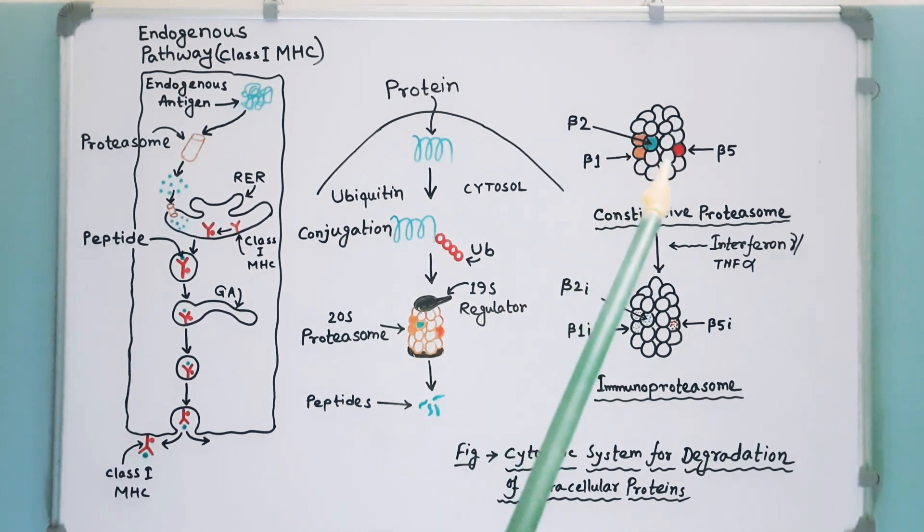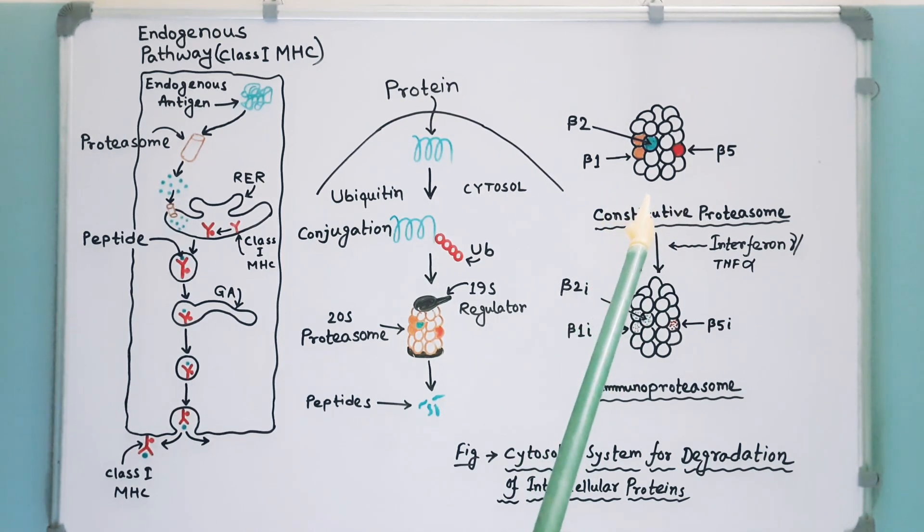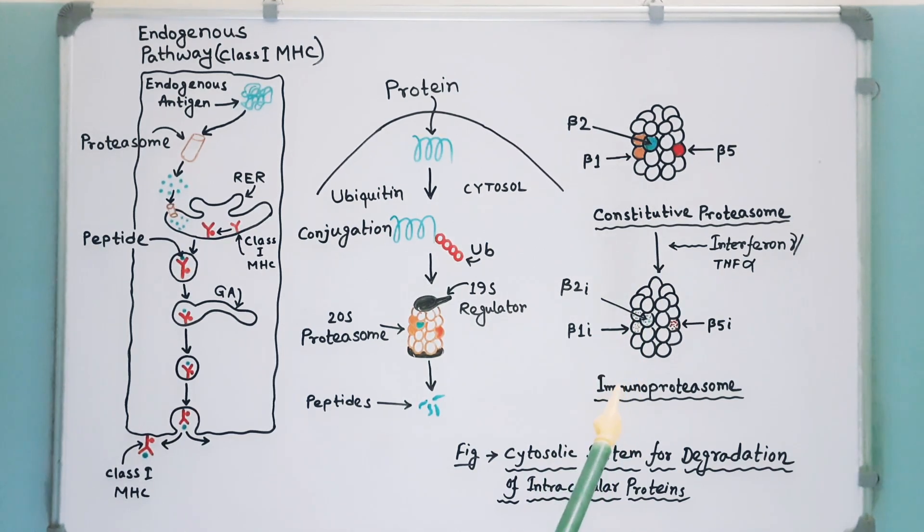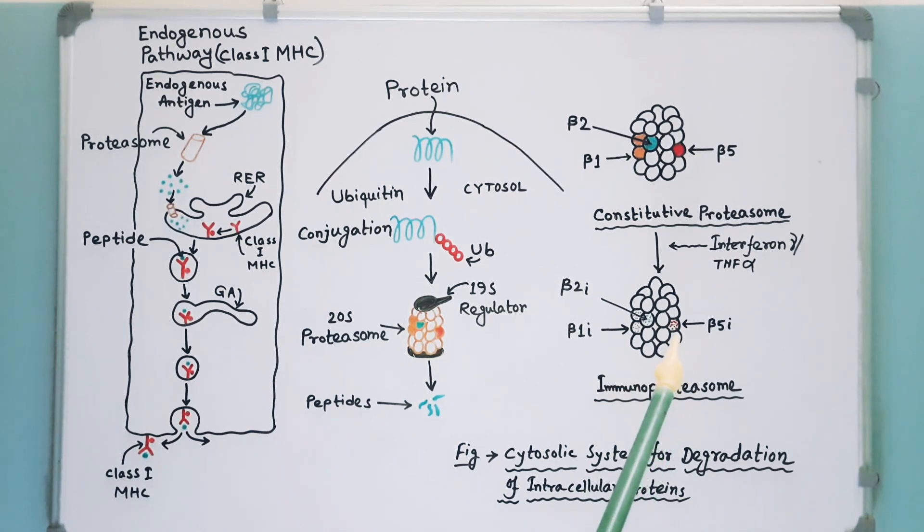Here I have drawn a diagram of standard or constitutive proteasome. This kind of proteasomes are present in all cells. In addition to the standard 20-S proteasomes, a distinct proteasome of the same size can be found in activated antigen-presenting cells and the cells of infected tissues. This distinct proteasome is called the immunoproteasome.